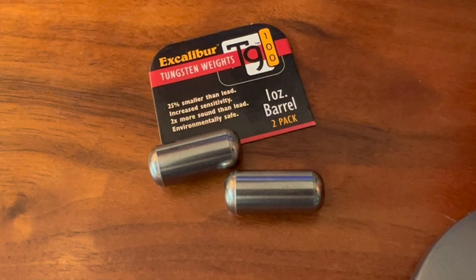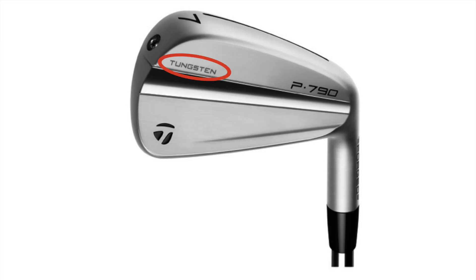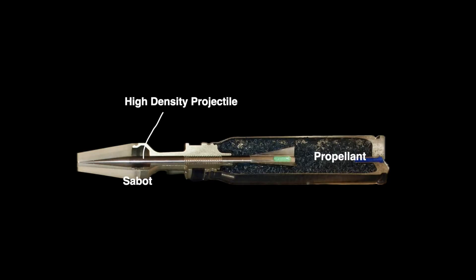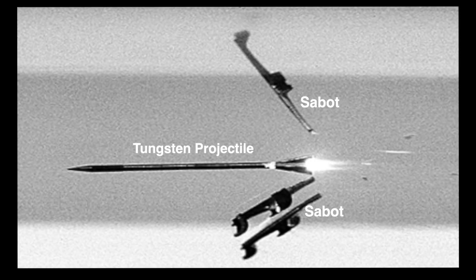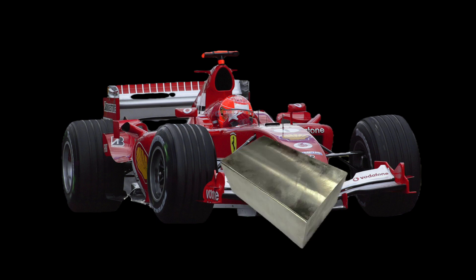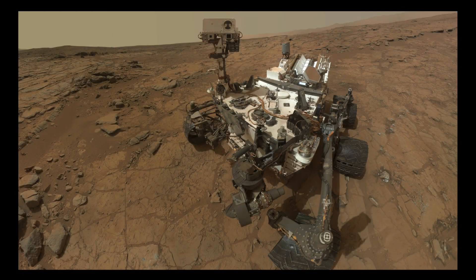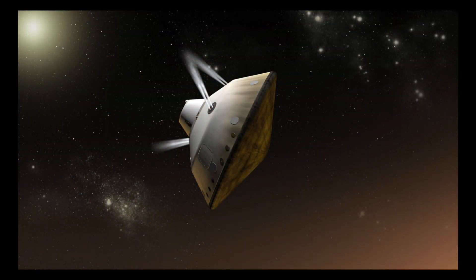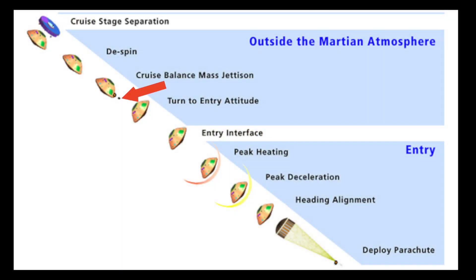Other applications of tungsten take advantage of its high density and relatively low toxicity. Thus, tungsten may be used in fishing line weights and to balance the weight distribution in golf clubs, and as a high-density projectile in armor-piercing ammunition. Tungsten blocks are attached under Formula One race cars to meet a minimum weight requirement. The Curiosity rover, which landed on Mars in 2012, utilized 75-kilogram blocks of tungsten as cruise balance weights that were ejected prior to landing.